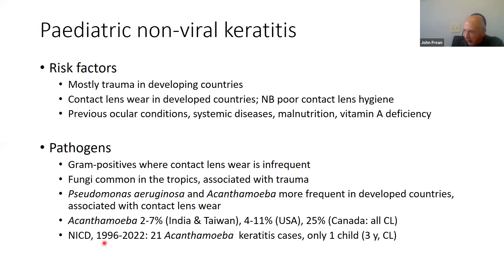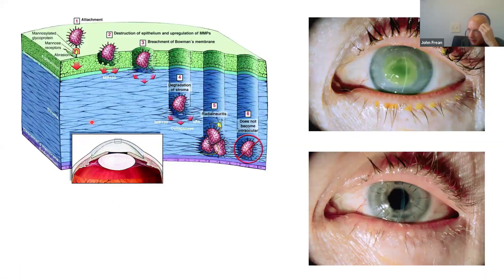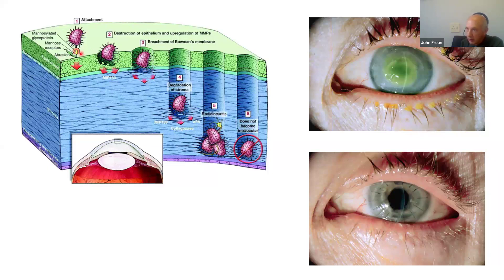Of our Acanthamoeba cases identified and diagnosed over the years, only one has been in a child — a three-year-old who was a contact lens wearer. The pathogenesis of keratitis generally involves some injury — often very minor — to the cornea, due to improper contact lens wear, leaving them in too long or not cleaning them. This provides a foothold for the amoeba, which has mannose receptors that bind to exposed tissue.